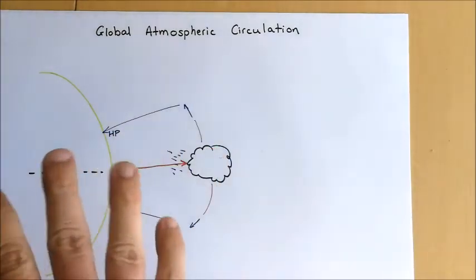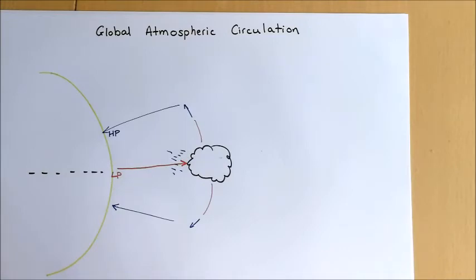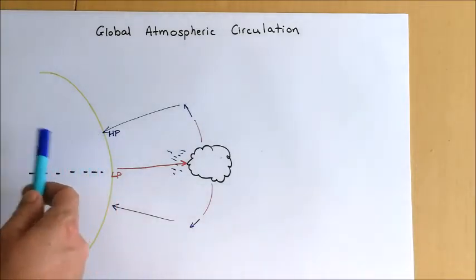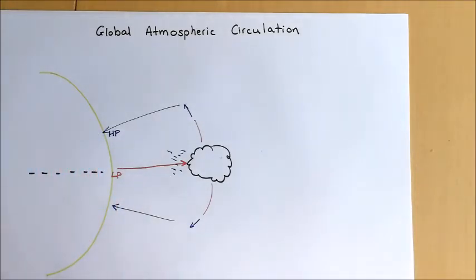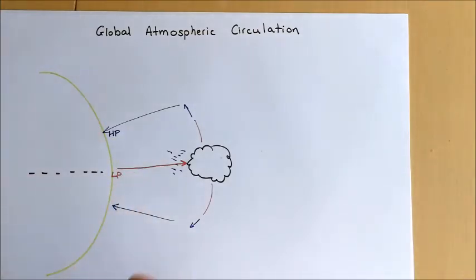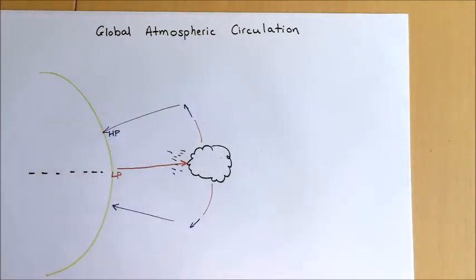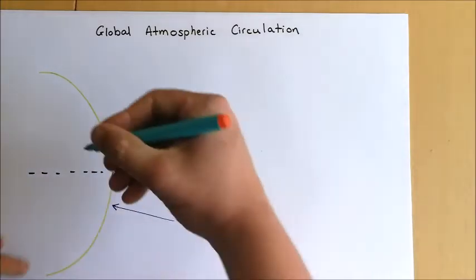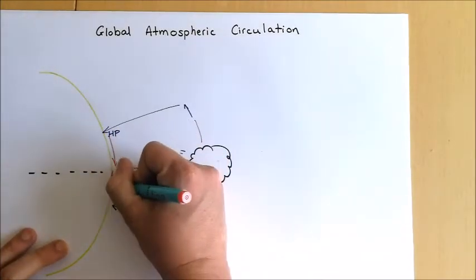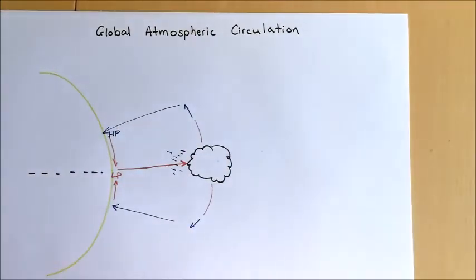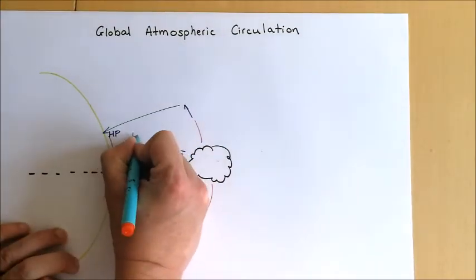At this area of high pressure where the air is sinking back down towards the ground, we get very dry conditions. This point at which the air is sinking is roughly around the Tropics of Cancer and Capricorn, somewhere between 15 to 30 degrees north and south. At this point, we find our hot deserts. That air is then drawn into that area of low pressure — the low pressure acts like a vacuum sucking the air in — completing the first cell of the atmospheric circulation. We refer to this cell as the Hadley cell.